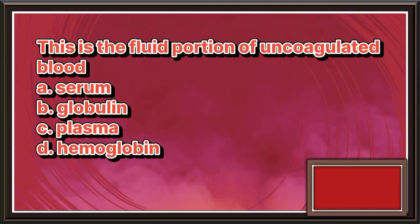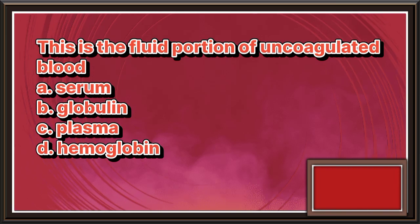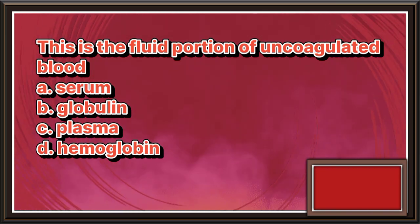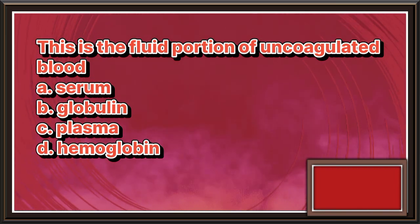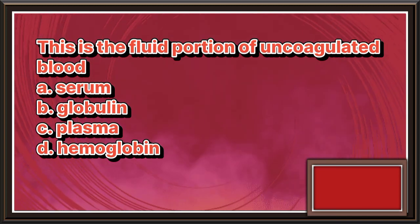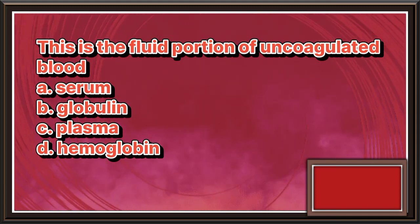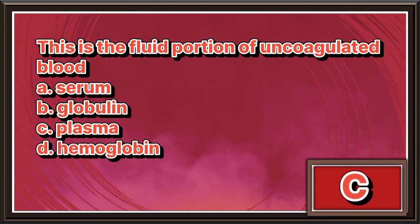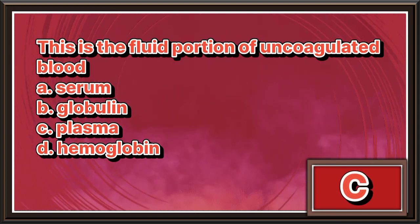This is the fluid portion of uncoagulated blood. A. Serum. B. Globulin. C. Plasma. D. Hemoglobin. The answer is letter C.